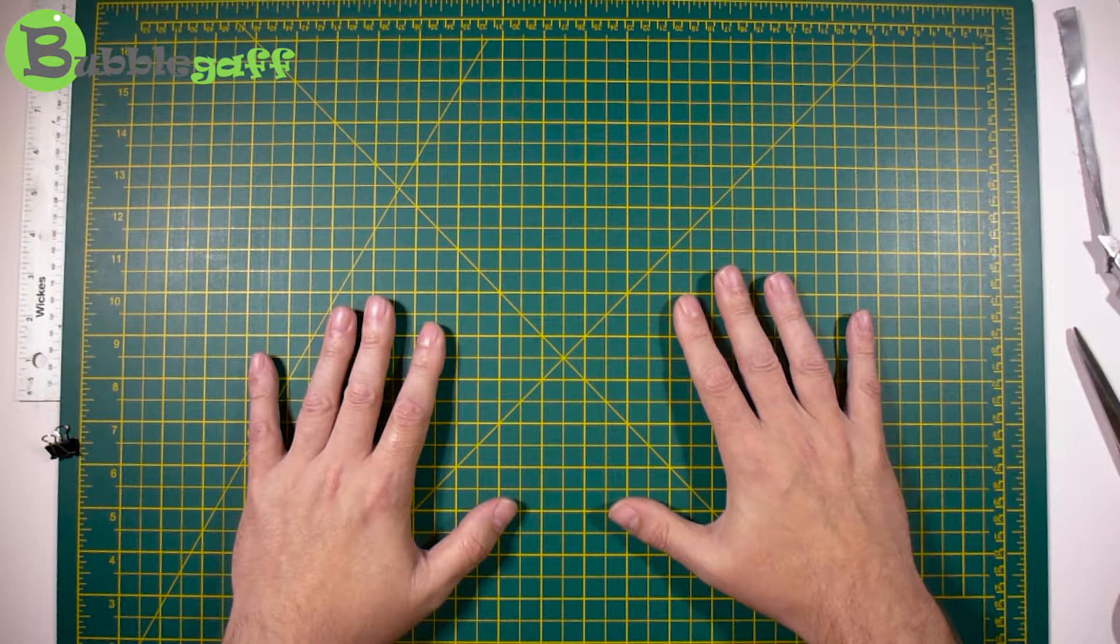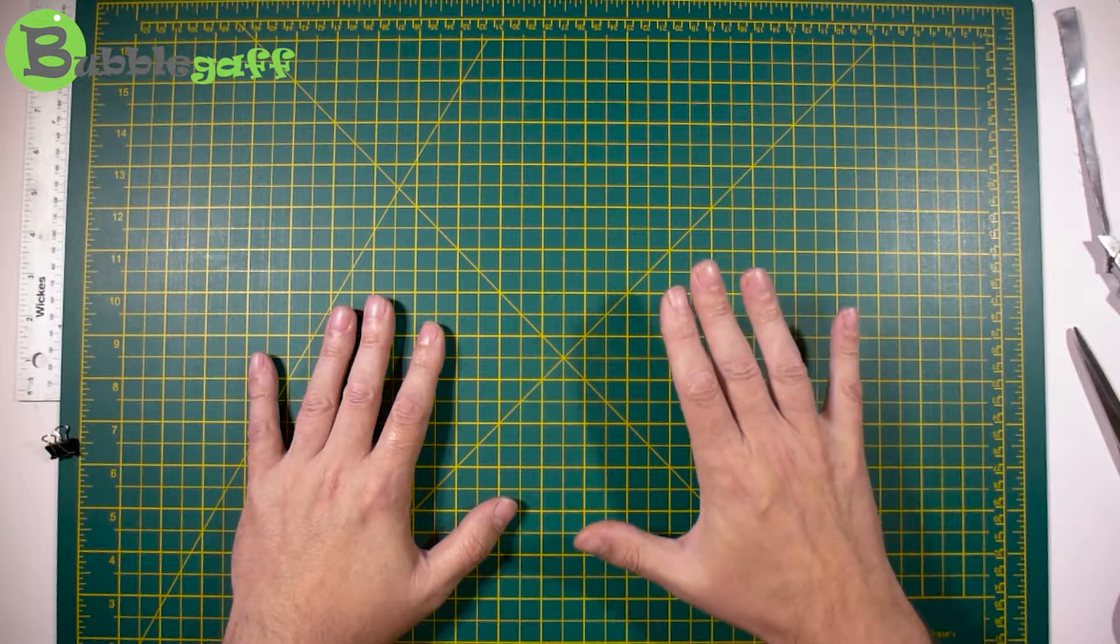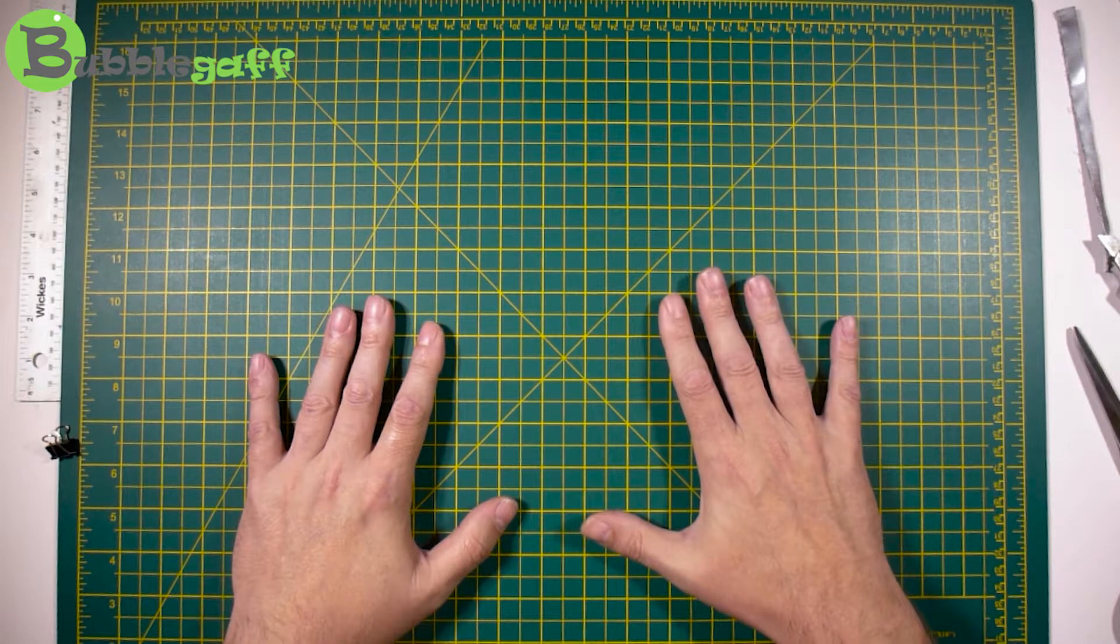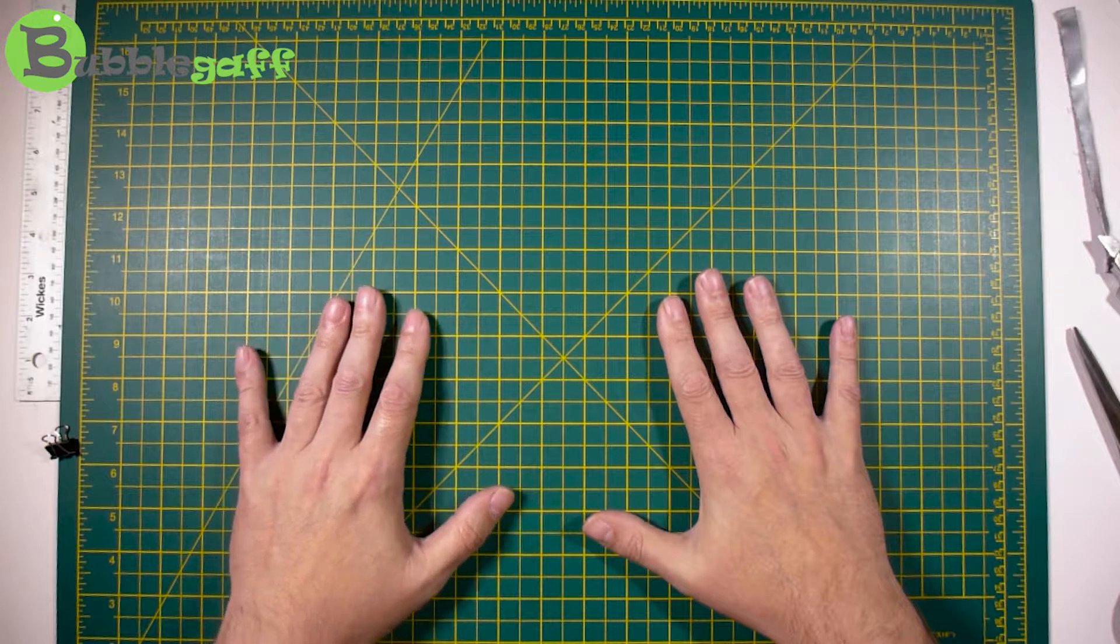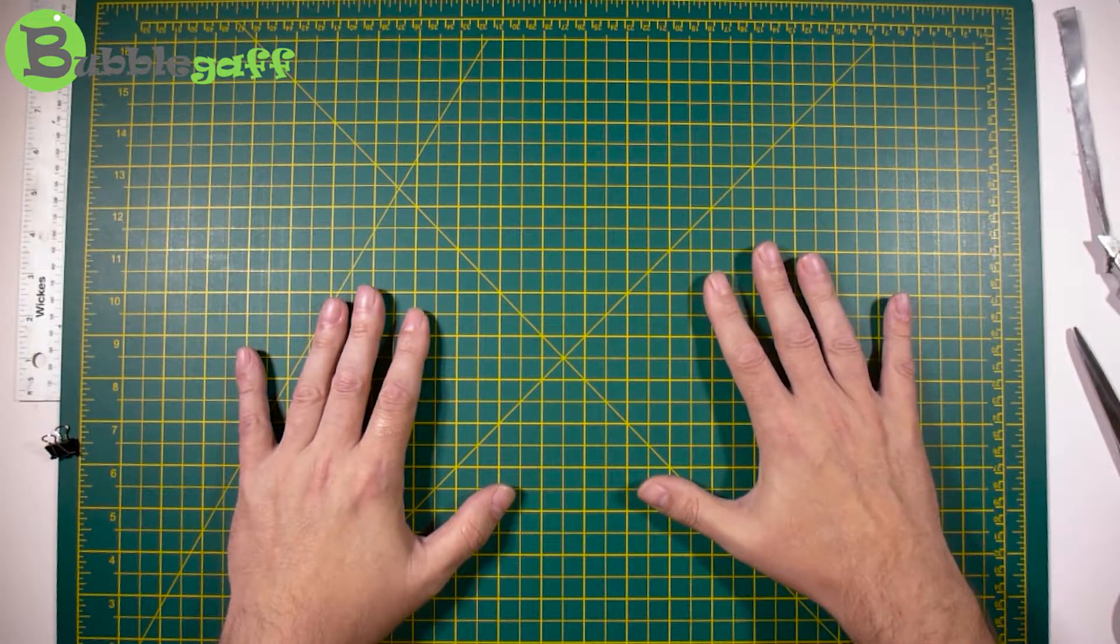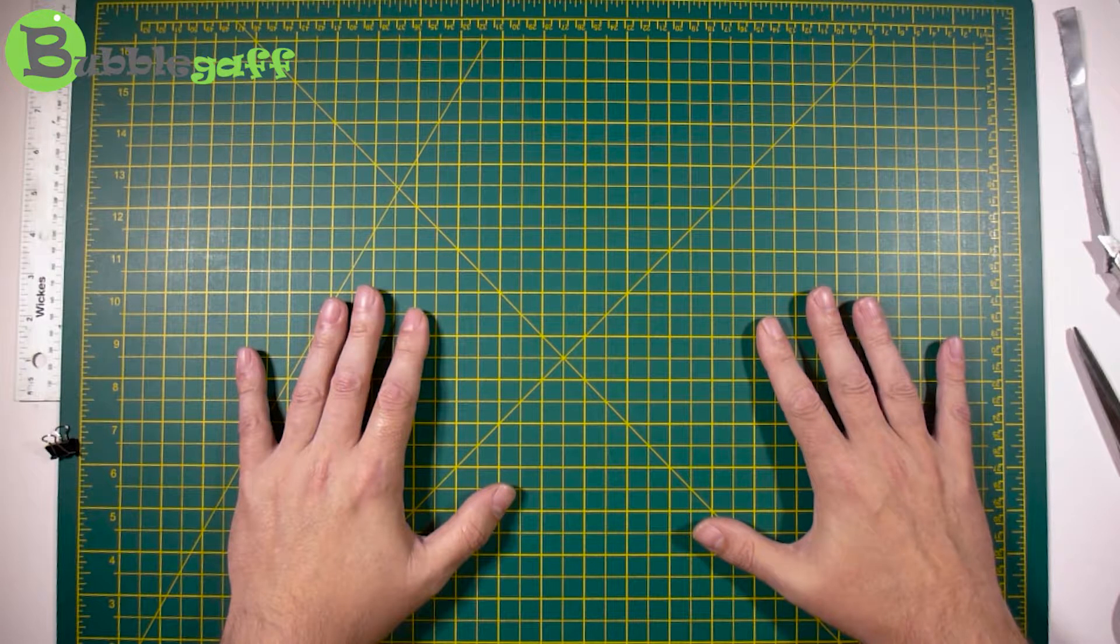So yeah, a cutting board is essential - not only for making decent straight cuts, but also so you don't get in trouble if you damage anything.